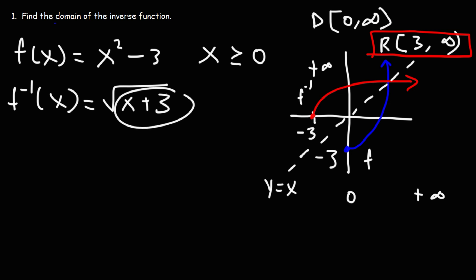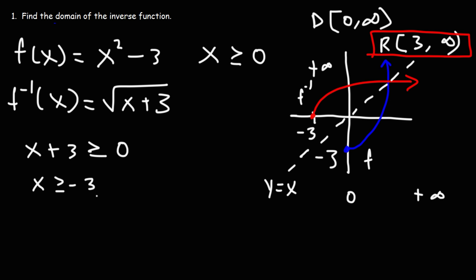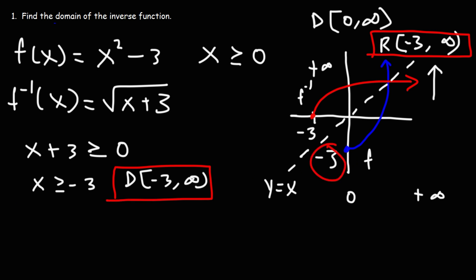Now when dealing with radical functions, the inside of the radical has to be equal to or greater than 0 — it can't be negative, otherwise you'll get an imaginary number. So subtracting both sides by 3, we get that x is equal to or greater than negative 3. For the range, I need to correct this — I put positive 3 for the range, but it should actually be negative 3. I missed that negative sign. Nevertheless, this is the answer. So the domain for the inverse function is from negative 3 to infinity.